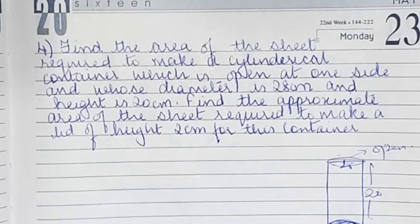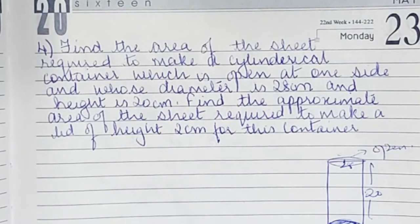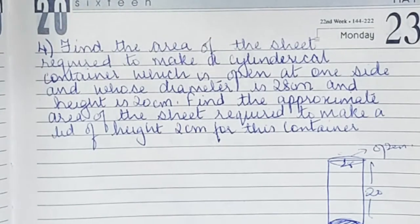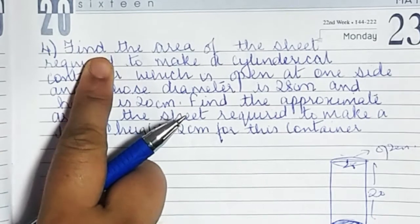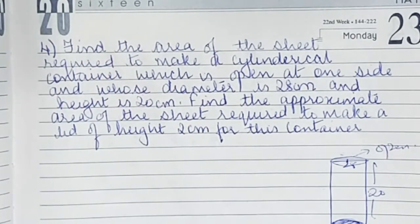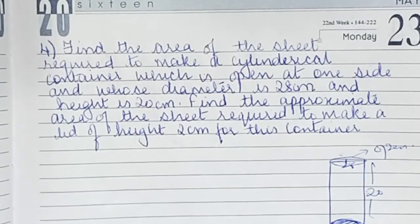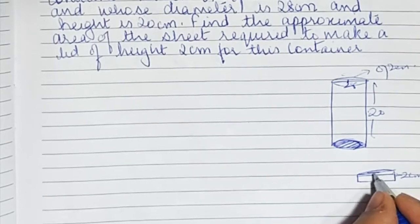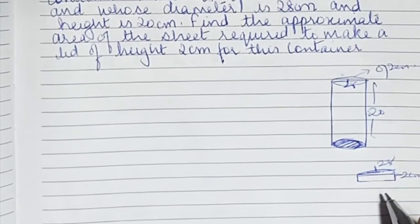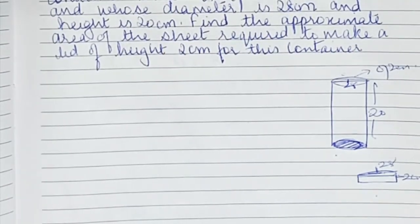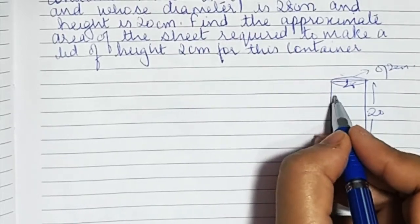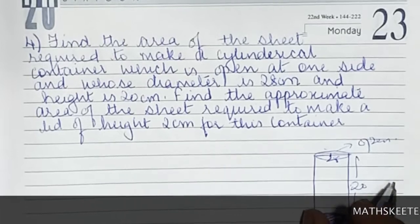Also find the approximate area of sheet required to make a lid of height 2 centimetres for this container. So two things we have to find: one is the cylindrical container and the other is the lid. The lid's height is 2 centimetres and its diameter is also 28, because it's the same container's lid. First we'll find for the container — curved surface area plus the base area — then we'll do the same for the lid.